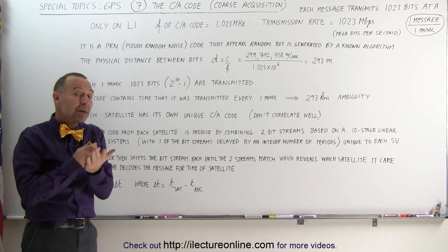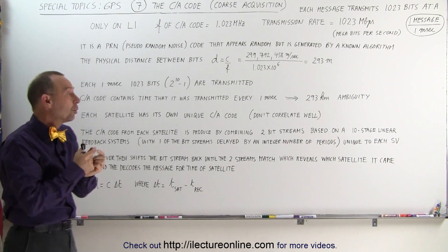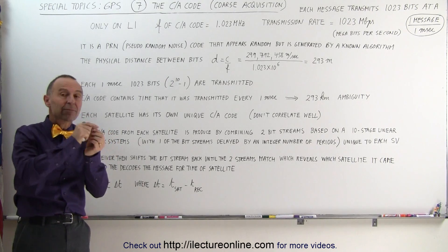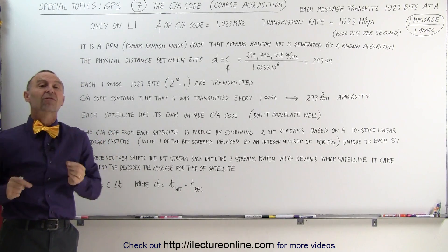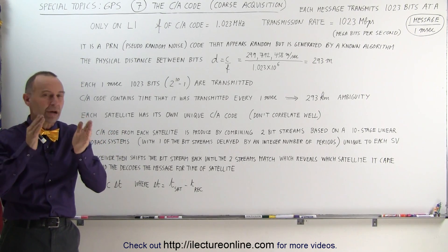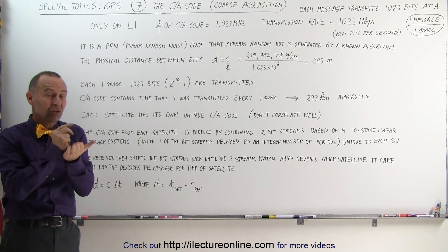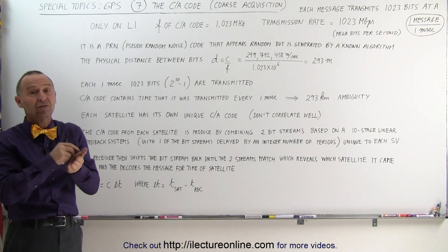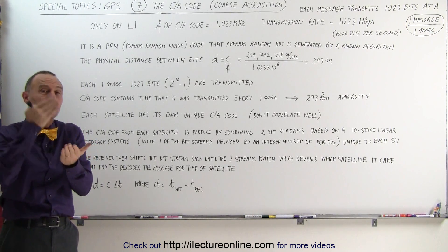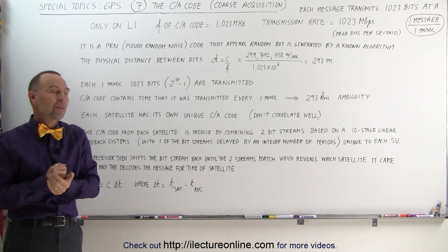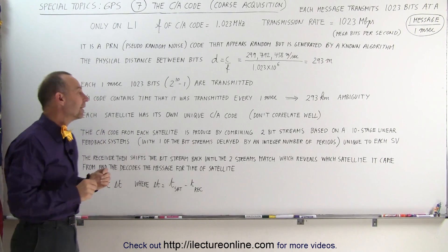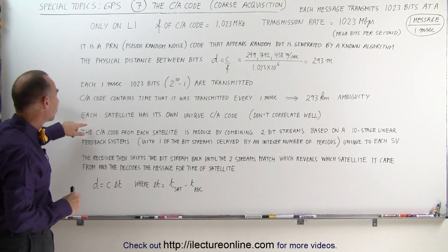What we mean by that is that what's encoded within the message is the time of transmission of the satellite, and that is of course a very accurate time because the satellite has those atomic clocks. So when it sends the message it knows exactly what time it is and that is embedded within that message.